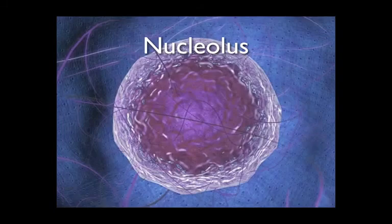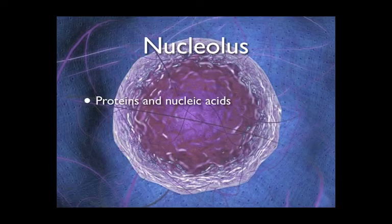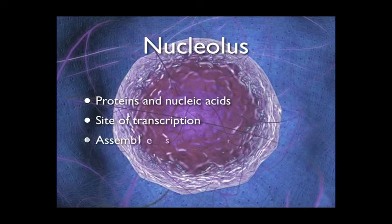The nucleolus is made of densely packed proteins and nucleic acids. It is located in the center of the nucleus and is the site of transcription of DNA onto the mRNA. This mRNA leaves the nucleus to join with ribosomes and create proteins. These ribosomes are made inside the nucleolus.